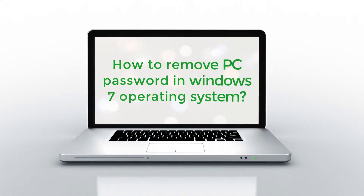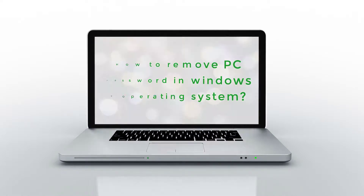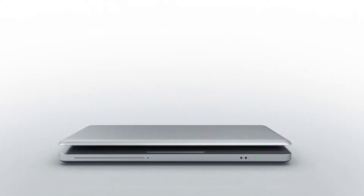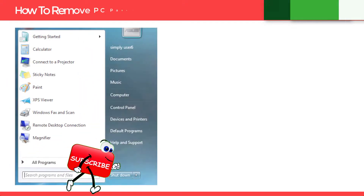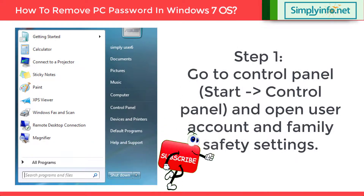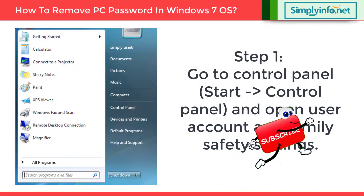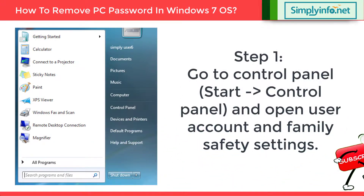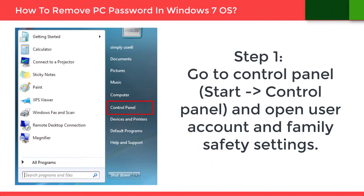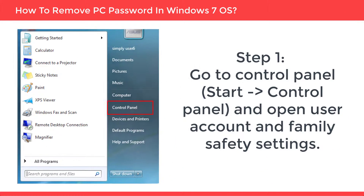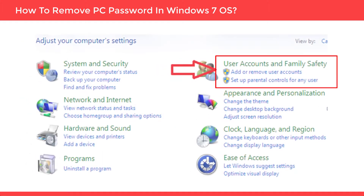How to remove a computer password in Windows 7. Step 1: Click on the Start menu and go to Control Panel, and open User Account and Family Safety Settings.